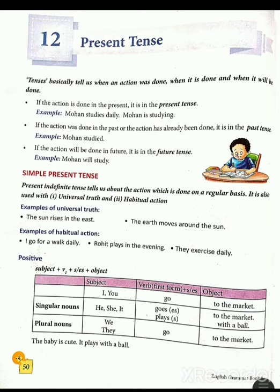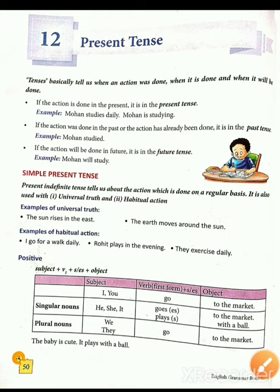Now let's learn about simple present tense. There are 3 tenses and each has 4 parts: simple, continuous, perfect, and perfect continuous. Here we are reading simple present tense, also called present indefinite. Present indefinite tense tells us about the action which is done on a regular basis. It is also used with universal truth and habitual action.